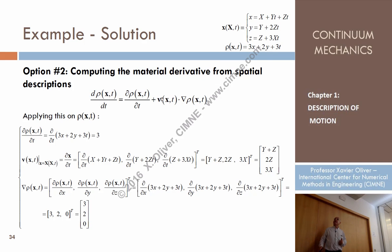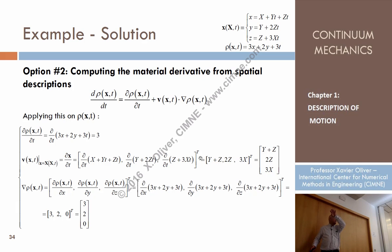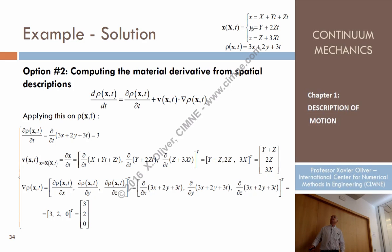Now let's compute the velocity. I have to differentiate the equations of motion with respect to time. The velocity is a vector: the first component is the derivative of small x with respect to time, which is y plus z. The second component is the derivative of y with respect to t, which is 2z. The third component is the derivative of z with respect to time, which is 3x. So the velocity vector has components: y plus z, 2z, and 3x.